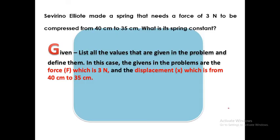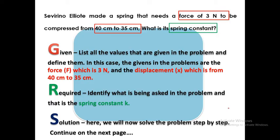Let's solve the problem. First, let's start with the given. What are given? In this case, force is 3 newtons, displacement is 40 centimeters to 35 centimeters. Required: what is being asked in the problem? In this case, that's the spring constant. Now we will try to solve the problem. Review the variables that are given, the variable that is being required, before we can proceed to the solution.